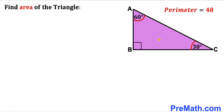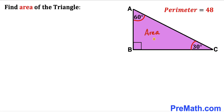Welcome to PreMath. In this video we have got a 30-60-90 triangle ABC, as you can see in this diagram, such that angle ACB is 30 degrees, angle BAC is 60 degrees, and angle ABC is 90 degrees. The perimeter of this triangle has been given to us as 48 units, and our task is to calculate the area of triangle ABC.